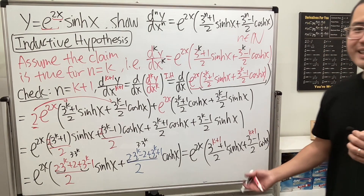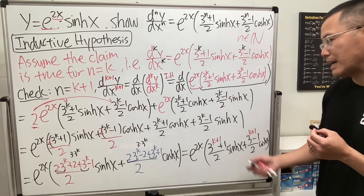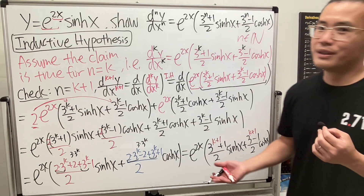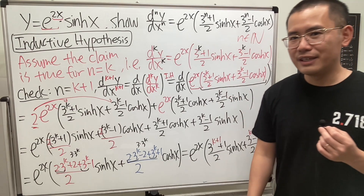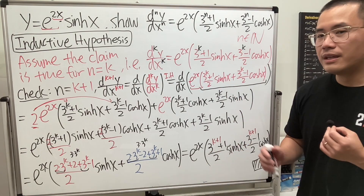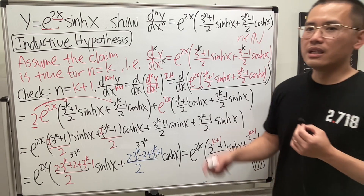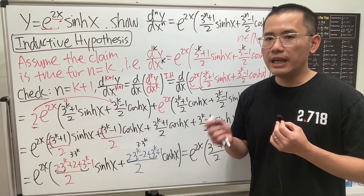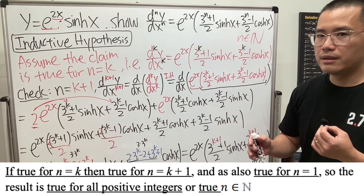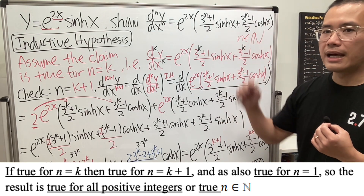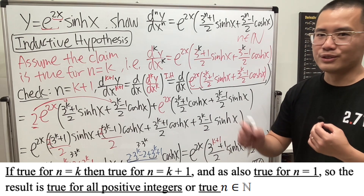This is the result, and I would normally box it here as the induction proof is complete. However, for the A-level test you must write the final conclusion statement. You should say: this is true for the base case n equal to one, and if it is true for n equal to k and also true for n equal to k plus one, then by mathematical induction this claim is true for all positive integers n.